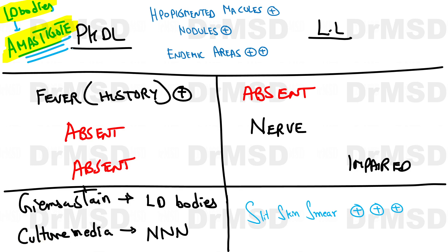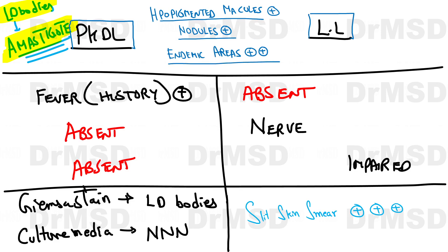PKDL — Post Kala-azar Dermal Leishmaniasis — and Lepromatous Leprosy have certain common features. Both can present with hypopigmented macules and nodules over the face. The endemic areas for both conditions are also almost the same in India: Bihar, Uttar Pradesh, and Jharkhand.